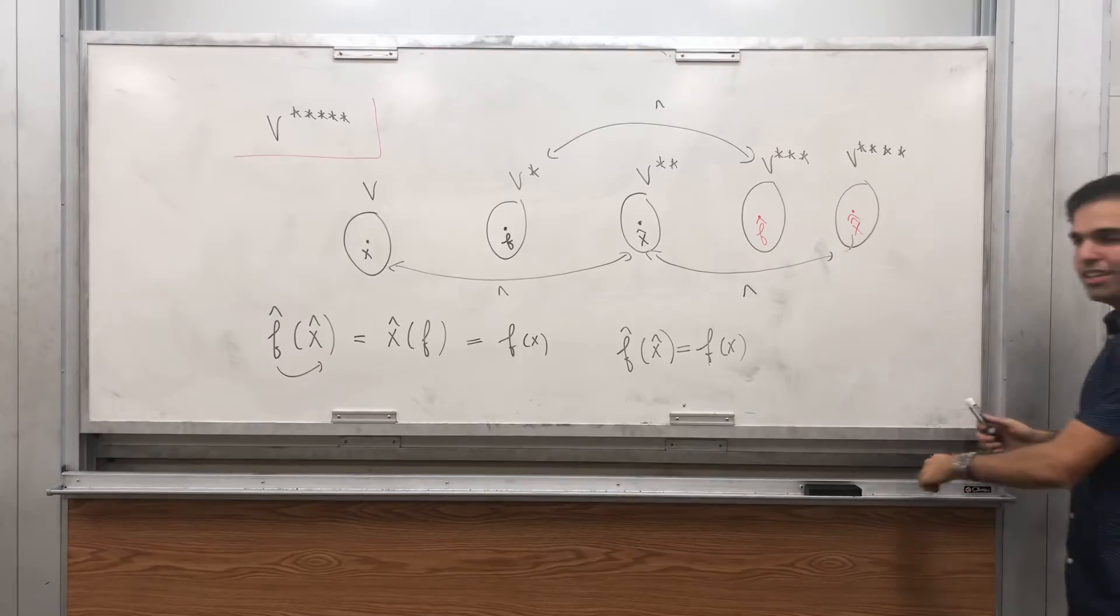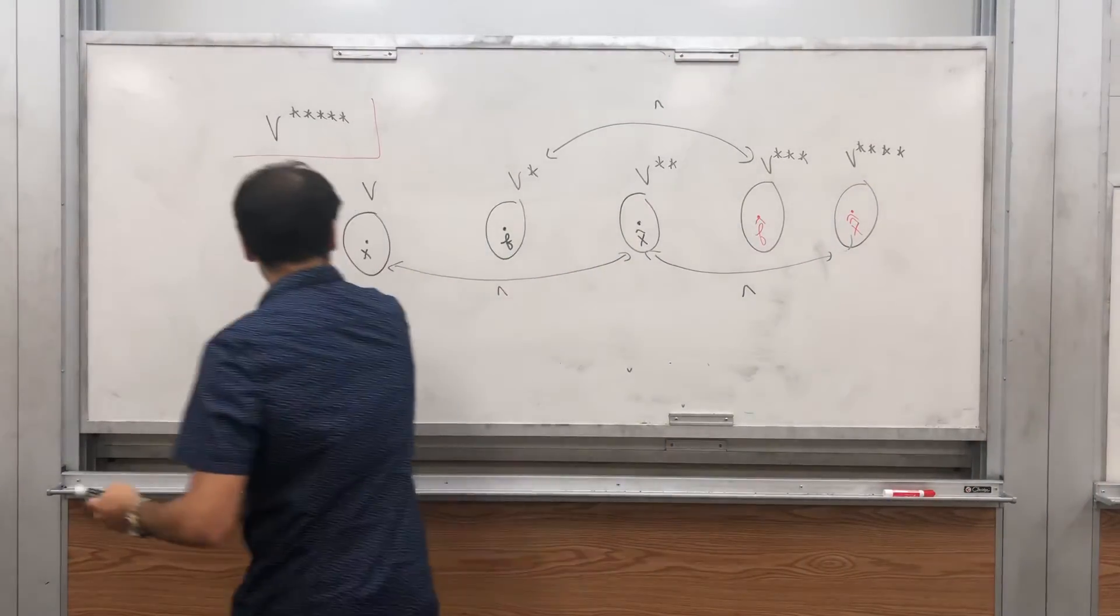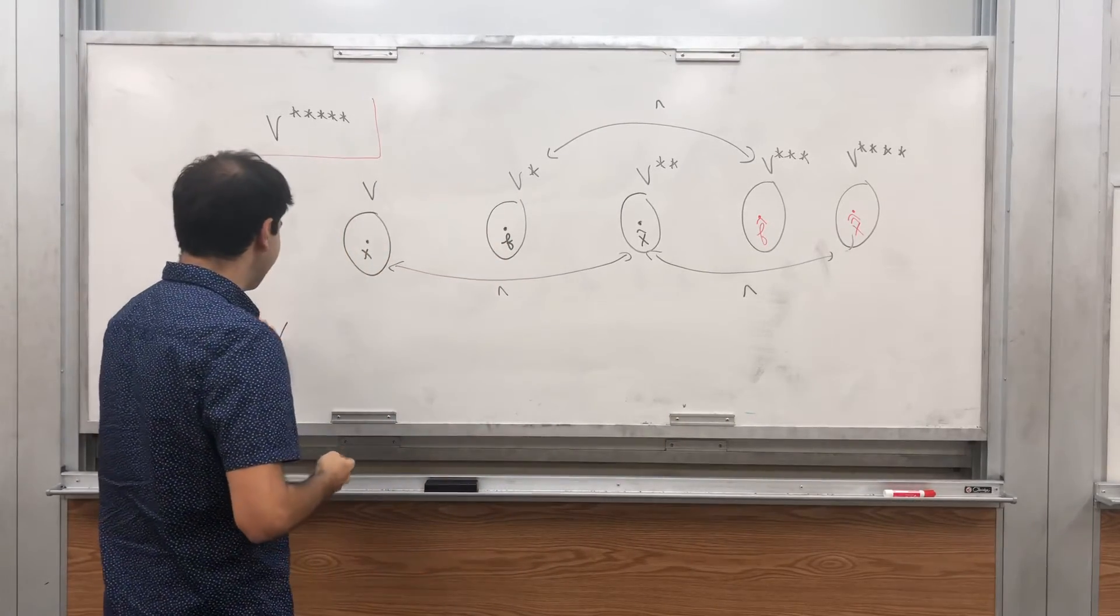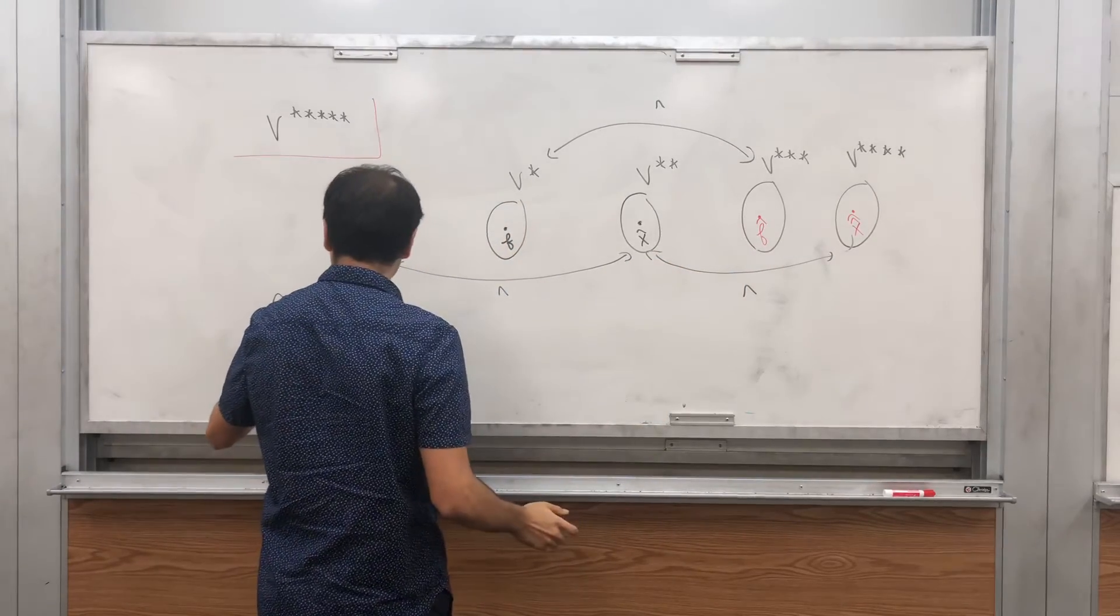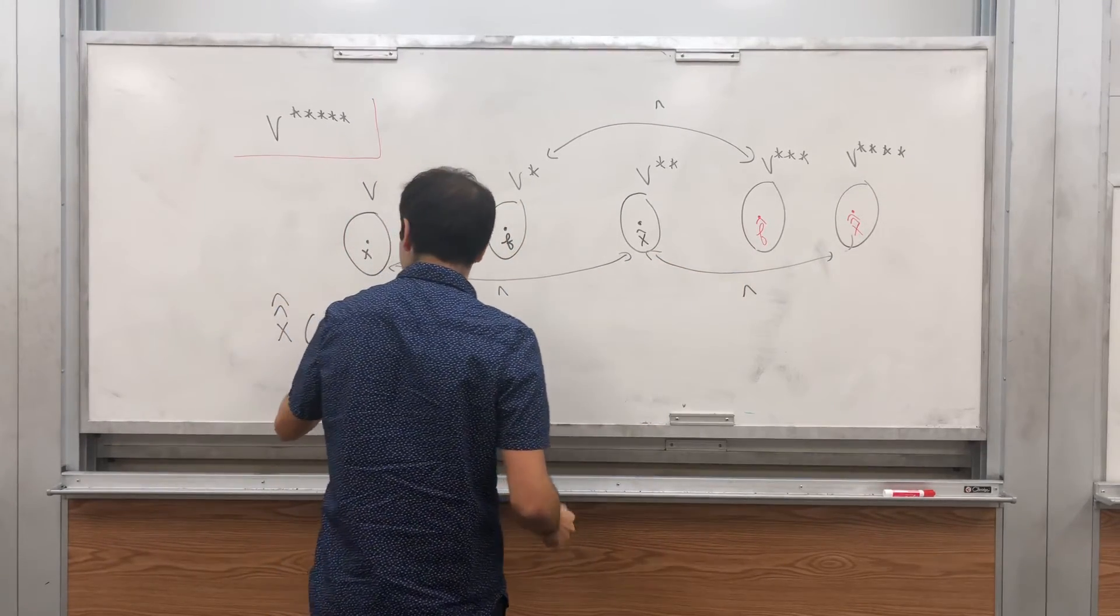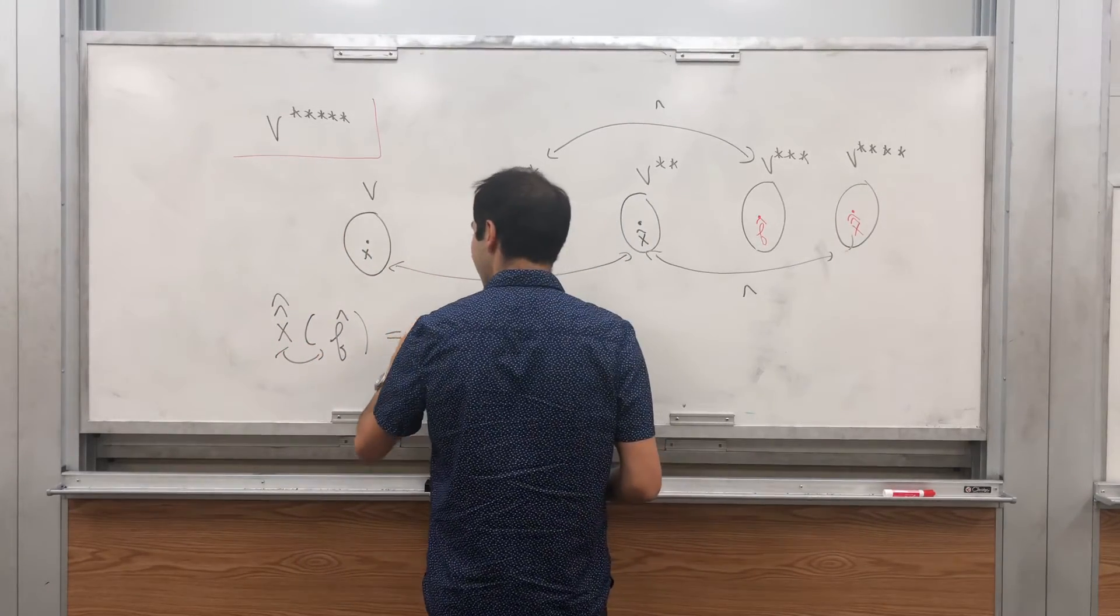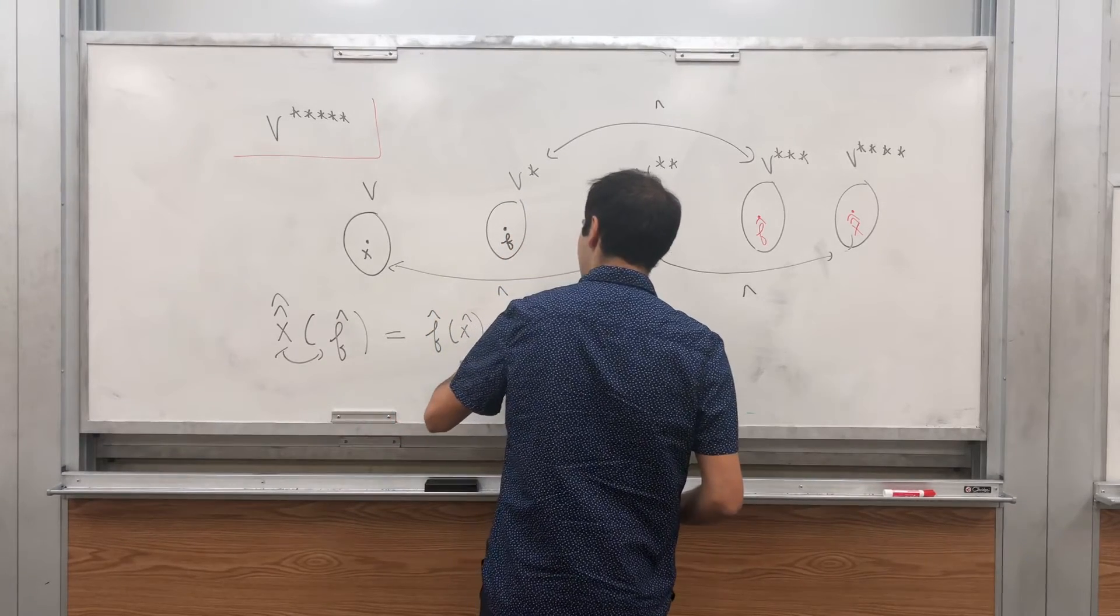Technically different hats, but it's all isomorphic. What is X hat hat? It takes an element here as its input, so X hat hat of F hat hat equals, whenever you switch it you remove a hat, so it's F hat of X hat, and this is F of X.